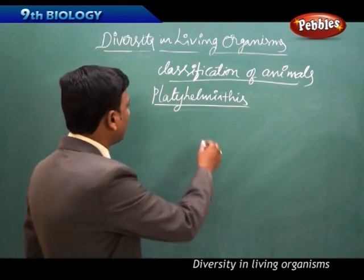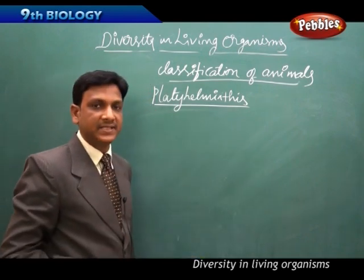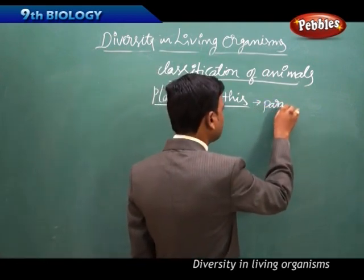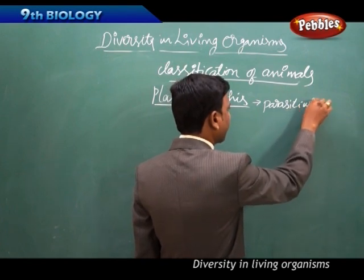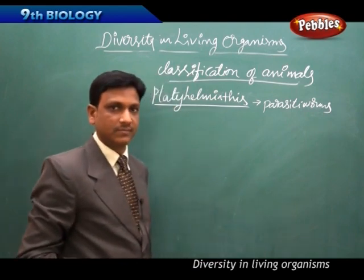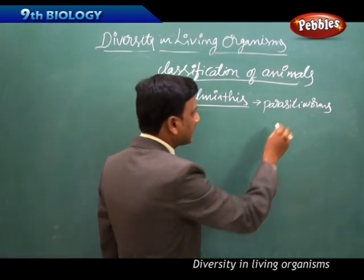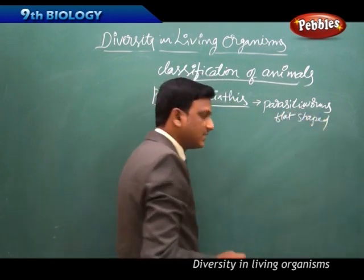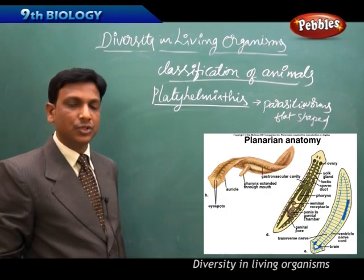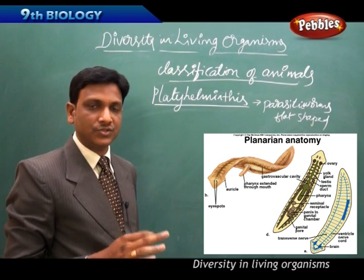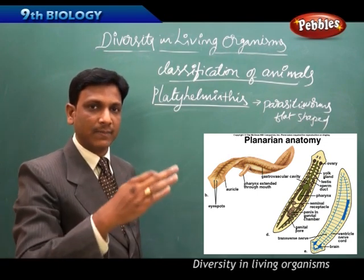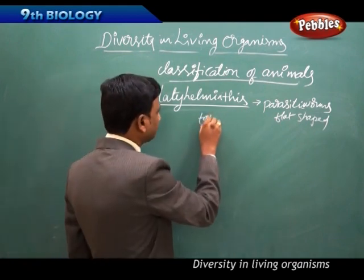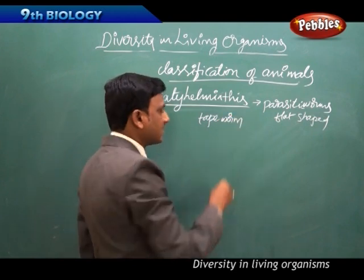The next phylum is Platyhelminthes. These are mainly parasitic worms with flat, dorsoventrally compressed bodies — compressed on both the front (stomach) side and the back side. An example is the tapeworm, which looks just like a measuring tape.